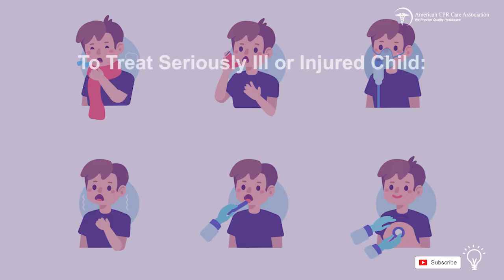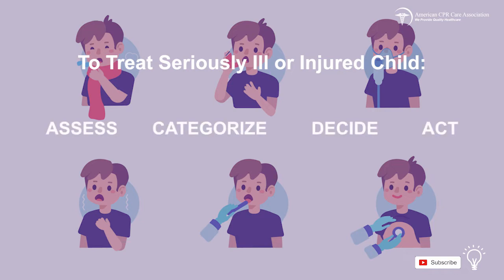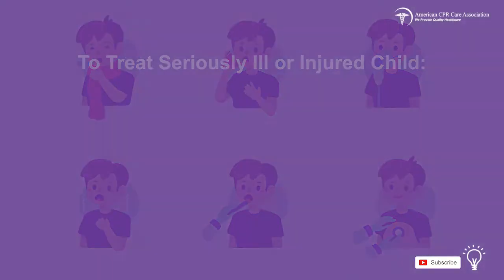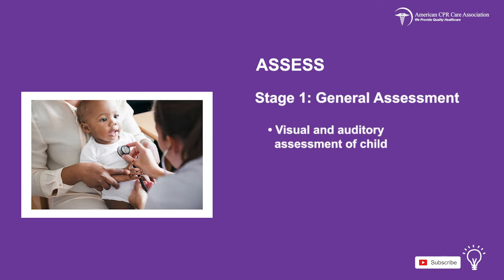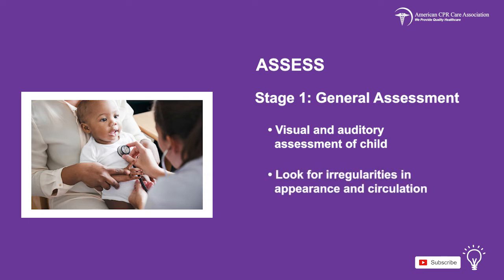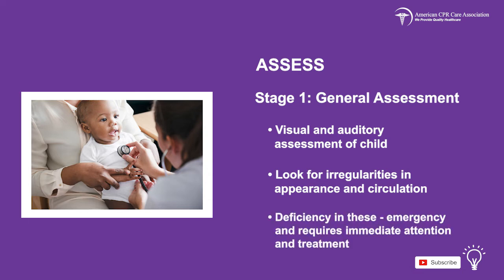To treat a seriously ill or injured child, use the Assess, Categorize, Decide, Act model. The assessment approach has four stages. The first part of the evaluation process is the general assessment, which requires a quick visual and auditory assessment of the child. This involves looking for irregularities based on appearance, breathing, and circulation. A deficiency in any of these factors ought to signal an emergency and requires immediate attention and treatment.